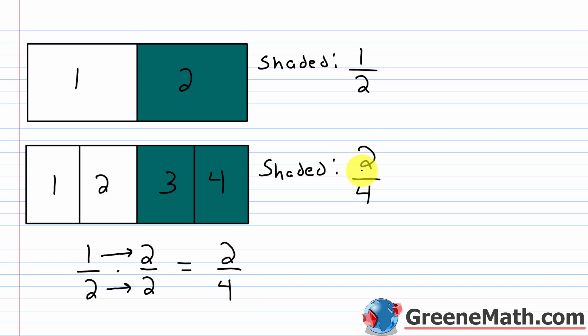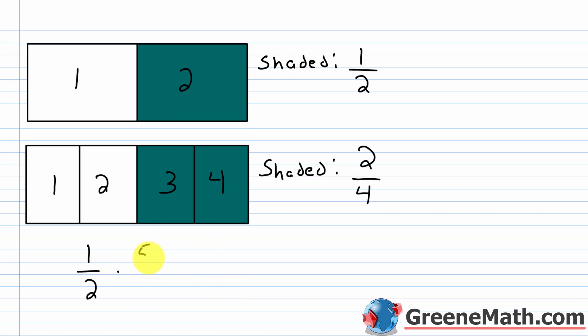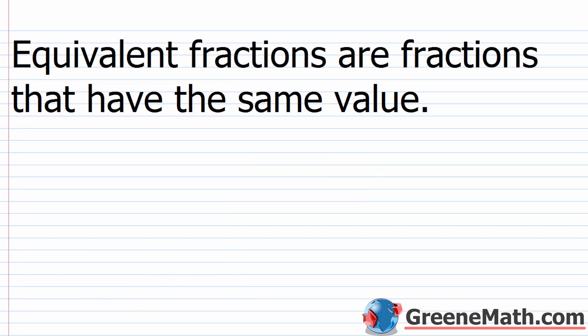I could keep going — multiplying 1/2 by 5/5, since 5/5 = 1: 1 × 5 = 5 and 2 × 5 = 10, so 5/10 is the same as 1/2. Equivalent fractions are fractions that have the same value. We just saw that with 1/2, 2/4, and 5/10 — those are all equivalent fractions because at the end of the day, they have the same value.